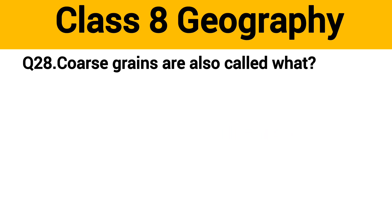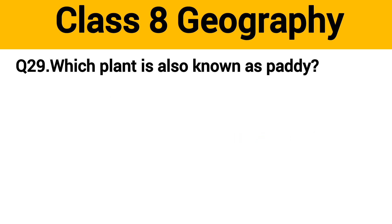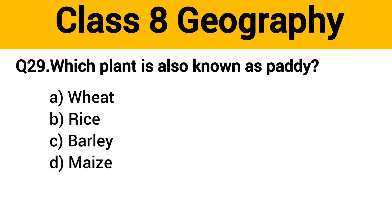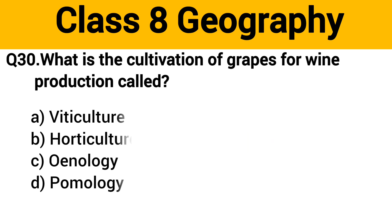Question number 28: Coarse grains are also called what? The right answer is option B: cereal grains. Question number 29: What plant is also known as paddy? The right answer is option B: rice. Question number 30: What is the cultivation of grapes for wine production called? The right answer is option B: viticulture.